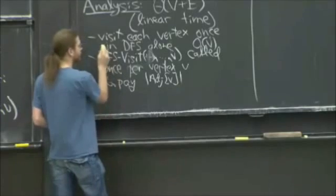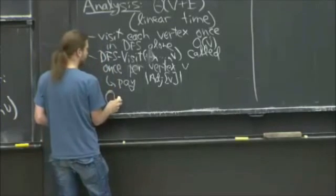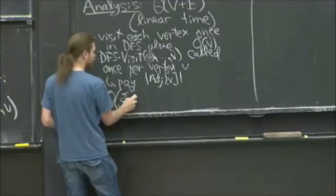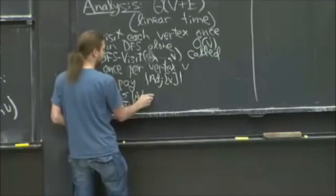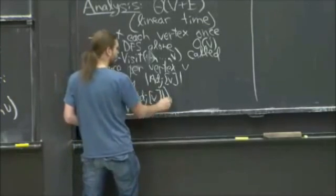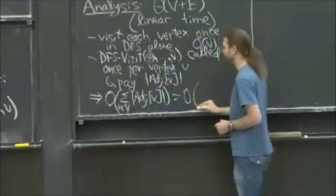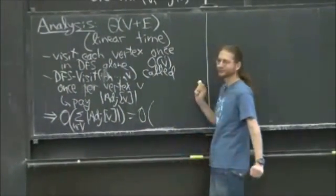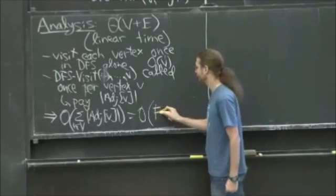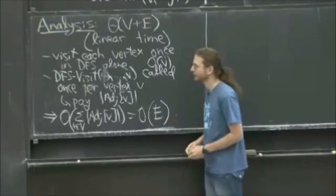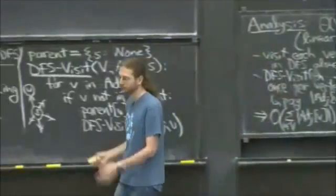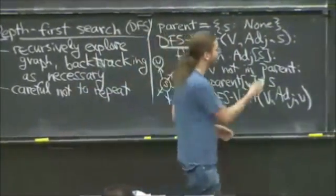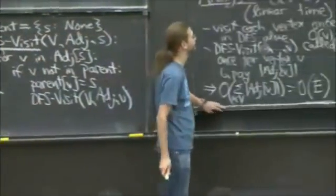So the total, in addition to this V, is going to be order sum over all vertices V in capital V of length of the adjacency list for V, which is E. This is the handshaking lemma from last time. It's twice E for undirected graphs. It's E for directed graphs. I've drawn directed graphs here. It's a little more interesting.